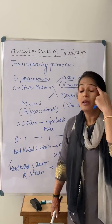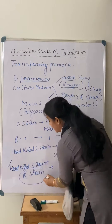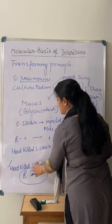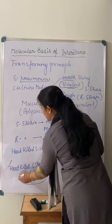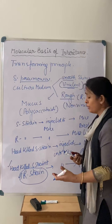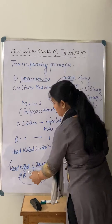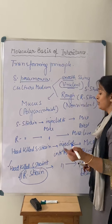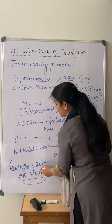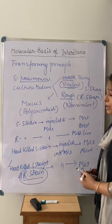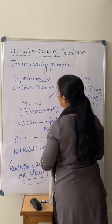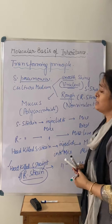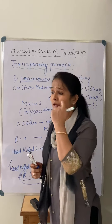When the heat-killed S strain was mixed with the R strain and injected, the mice died. This showed that the R strain, which was non-virulent, had become virulent — something had passed from the S strain into the R strain, changing it from non-pathogenic to pathogenic. Griffith concluded that some substance transformed the R strain into the S strain, and he called this the 'Transforming Principle.' This experiment was conducted around 1929.